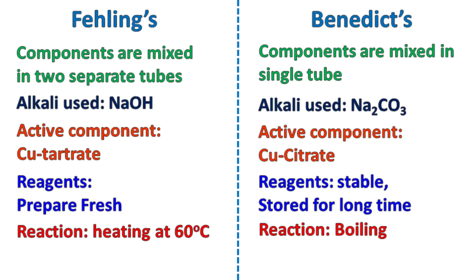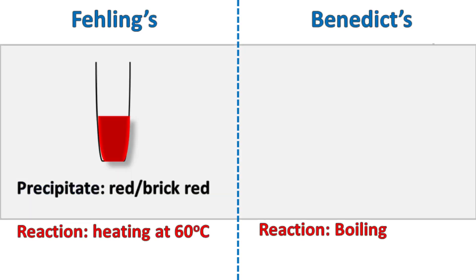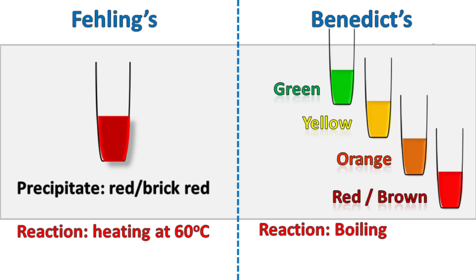In Fehling's test, the blue color of copper sulfate is converted to a red or brick red precipitate of copper oxide. While in the case of Benedict's test, the blue color of copper sulfate is converted to green, yellow, orange, or red-brown in color, depending on the concentration of sugar.